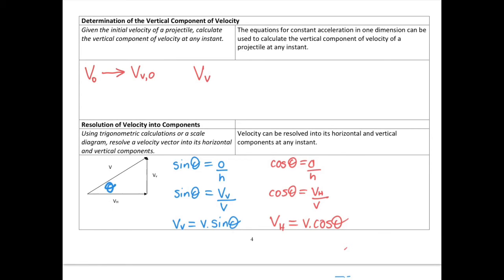Our vertical velocity at any instant will be given by whatever our initial vertical velocity was, plus whatever acceleration acts on it, which is usually gravity, which acts at 9.8 metres per second downwards, times by the time that it acted for. I will look at an example problem of this in the next video, so you'll see this in action.